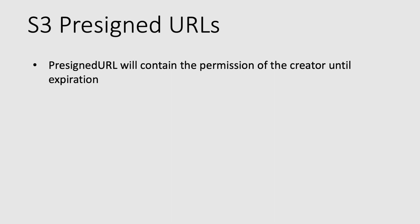Pre-signed URLs contain the permission of the creator. A creator could be an IAM user who has long-term credentials, or it could be an AWS service like a Lambda function or EC2 instance that has an appropriate IAM role associated with it. Those entities can create S3 pre-signed URLs, and the URL will contain the permission of either the IAM user or the IAM role until the expiration time.